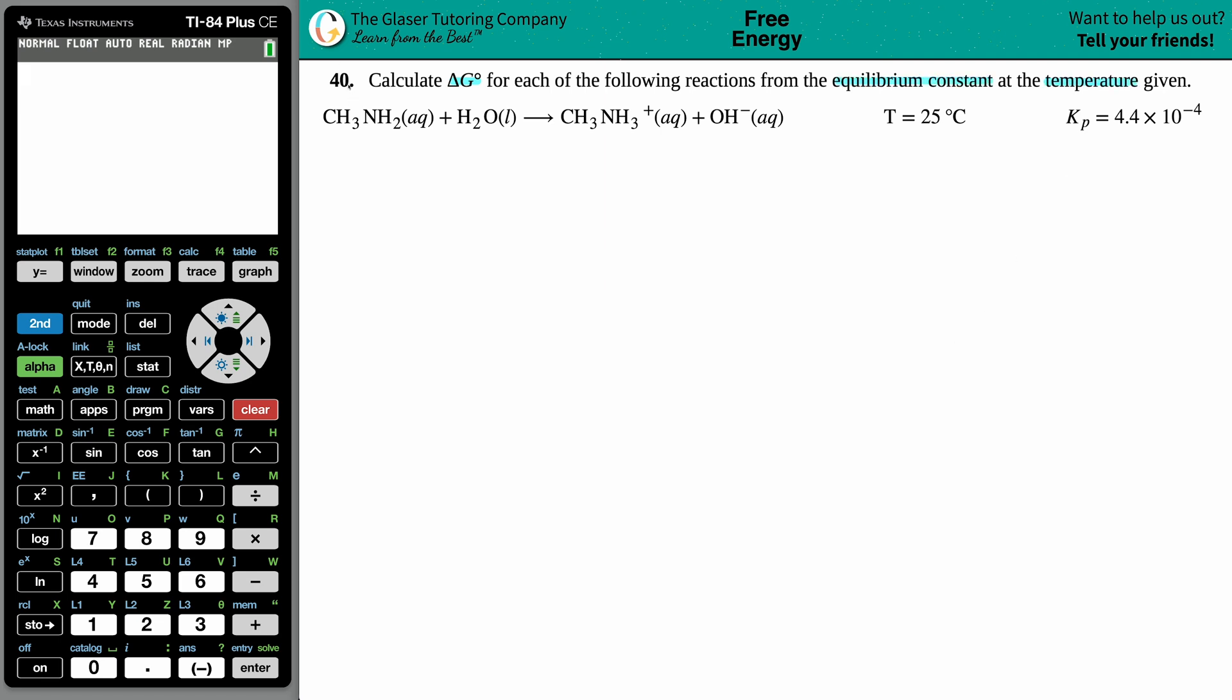Okay, cool. So we have this balanced equation. We have methylamine CH3NH2 aqueous plus water, H2O, and we will yield CH3NH3 plus plus hydroxide ion, OH minus.